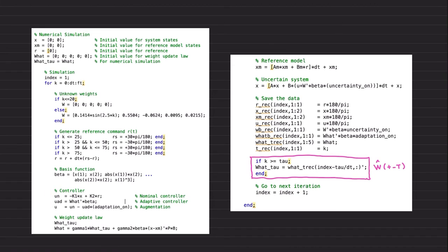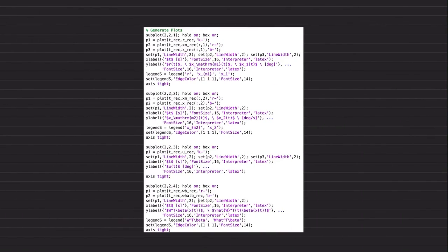nominal controller, adaptive controller, actual controller, and here is the weight update law, reference model, uncertain system, saving the data. The most important point in implementing derivative-free adaptive control, in my opinion, is this step. Basically, these three lines of code corresponds to W hat T minus tau or capital T based on the selection of the tau you have. And then, basically these are for generating plots.